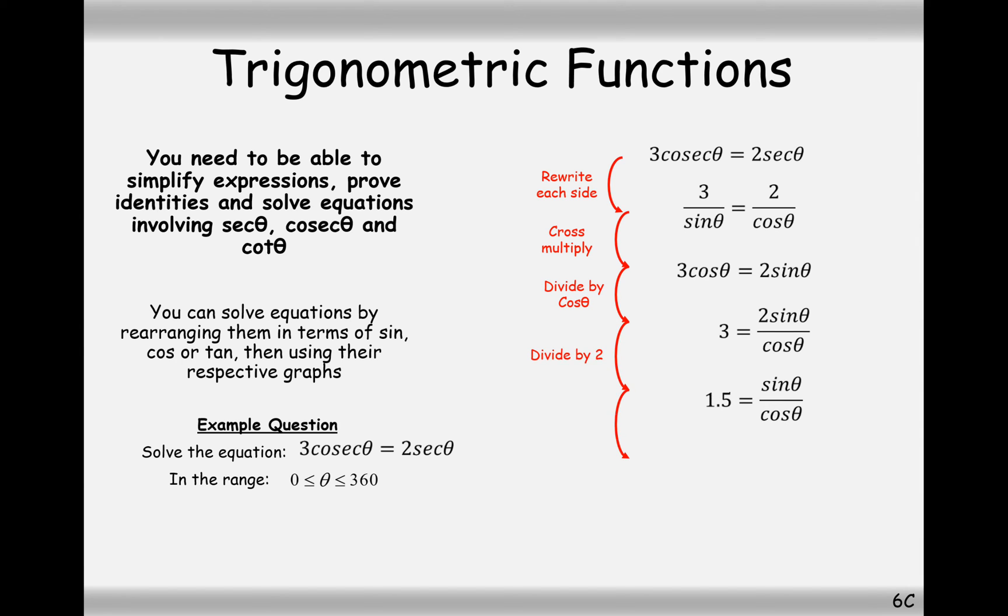So, we're going to get tan theta equals 1.5. So, now we need to find the other solutions. Inverse tan of 1.5, we get 56.34. Add on 180 to get the second solution, 236.31. And that's our answers.